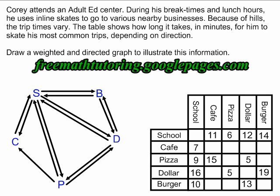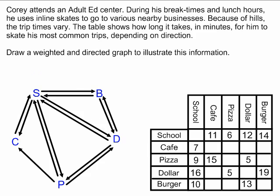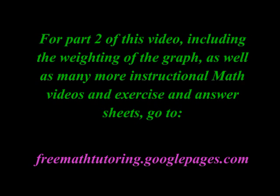The directed part of my graph is finished. Now what I have to do is show the weighting. I show the weighting just by using the number of minutes — how many minutes does it take for him to do each trip.